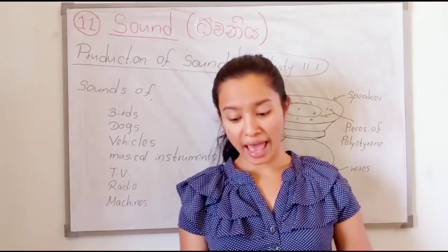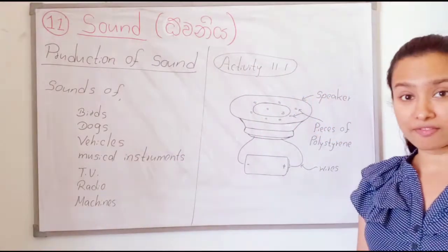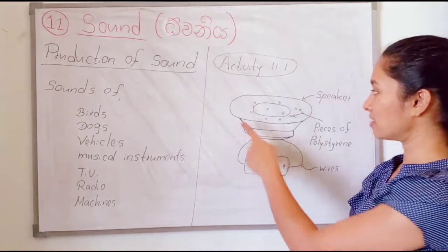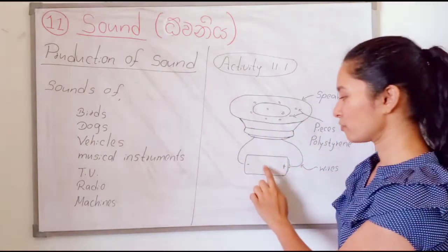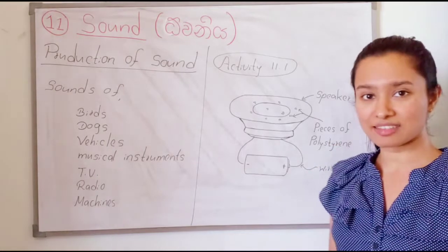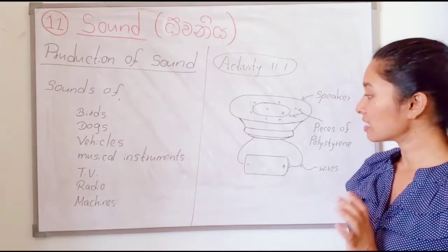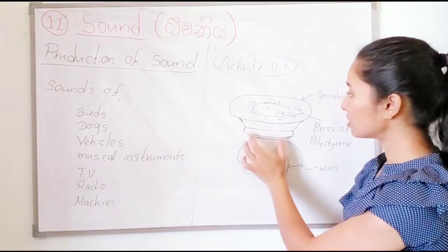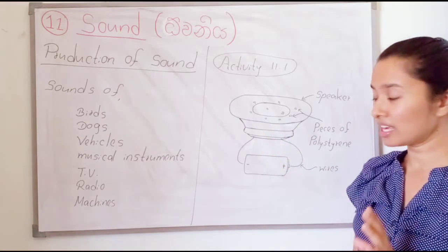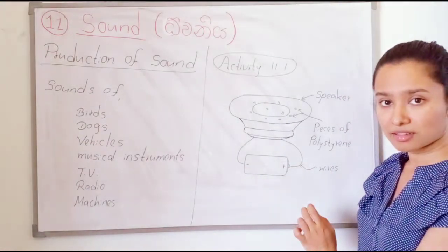Now we are going to do activity 11.1. In the first page of your science book, there is a practical activity — activity 11.1. Let's see how sound is produced. Here we need a speaker, a dry cell, some connecting wires, and some small pieces of polystyrene. What you have to do is first connect the connecting wires into the speaker, then put the pieces of polystyrene on the speaker. Then connect the other ends of the connecting wires into the dry cell and remove it.